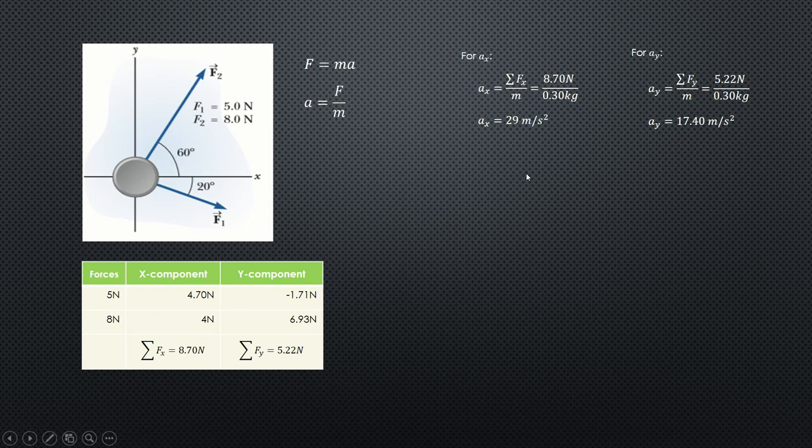Now the resultant value or the magnitude of the acceleration will give you the same formula from the previous example. The resultant force will equal the summation of forces along x squared plus summation of forces along y squared. Same application. Acceleration will equal the x component of the acceleration squared plus the y component of the acceleration squared.